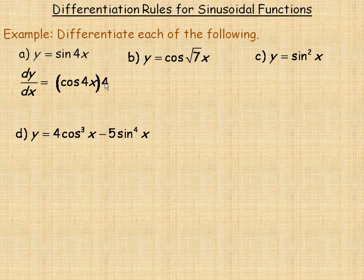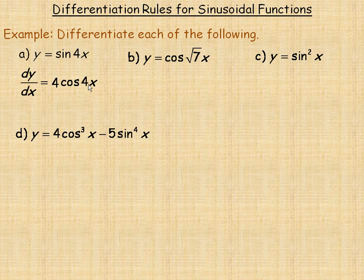Now we don't normally leave the 4 at the right — this is a matter of having good mathematical form. So we would normally put the 4 on the left, so the answer is 4cos(4x). That way somebody doesn't look at it and think they're supposed to multiply the 4 by the 4x to get 16x, because that's not the same thing.